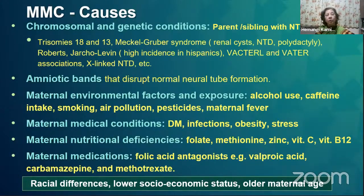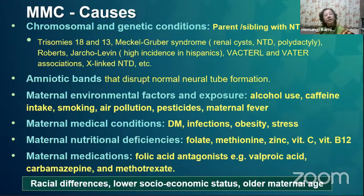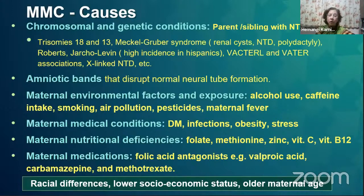There are multiple causes for MMC. Chromosomal and genetic conditions are very common, so it may also occur in a parent or sibling with an associated neural tube defect. Amniotic bands can cause MMC. Maternal factors include alcohol use, caffeine intake, smoking, pollution, diabetes mellitus, and obesity. Folate deficiency is one of the most common causes of MMC in our country. The mother may also be taking folic acid antagonists like valproic acid, carbamazepine, or methotrexate, which can also lead to MMC. Incidence varies among different races where genetic conditions are common, and is also higher in lower socioeconomic status and older maternal age.